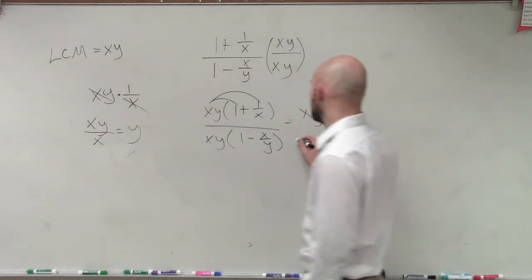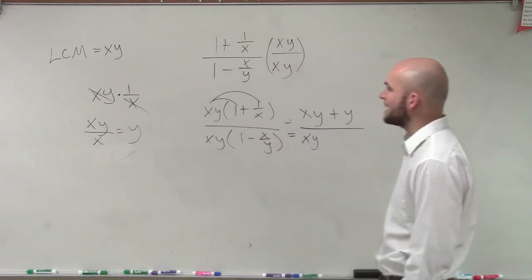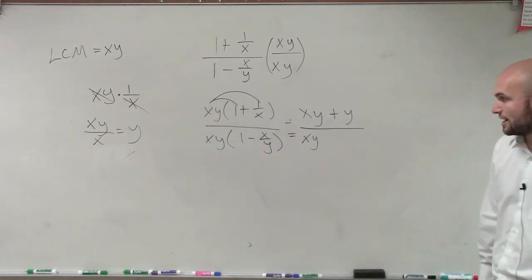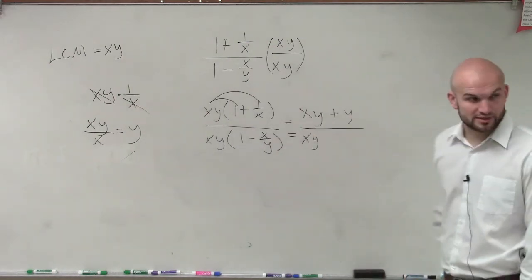Then, on the denominator, we'd have xy, and then xy times negative x over y. Well, now, the y's are going to divide to 1, and we're going to be left with x squared.